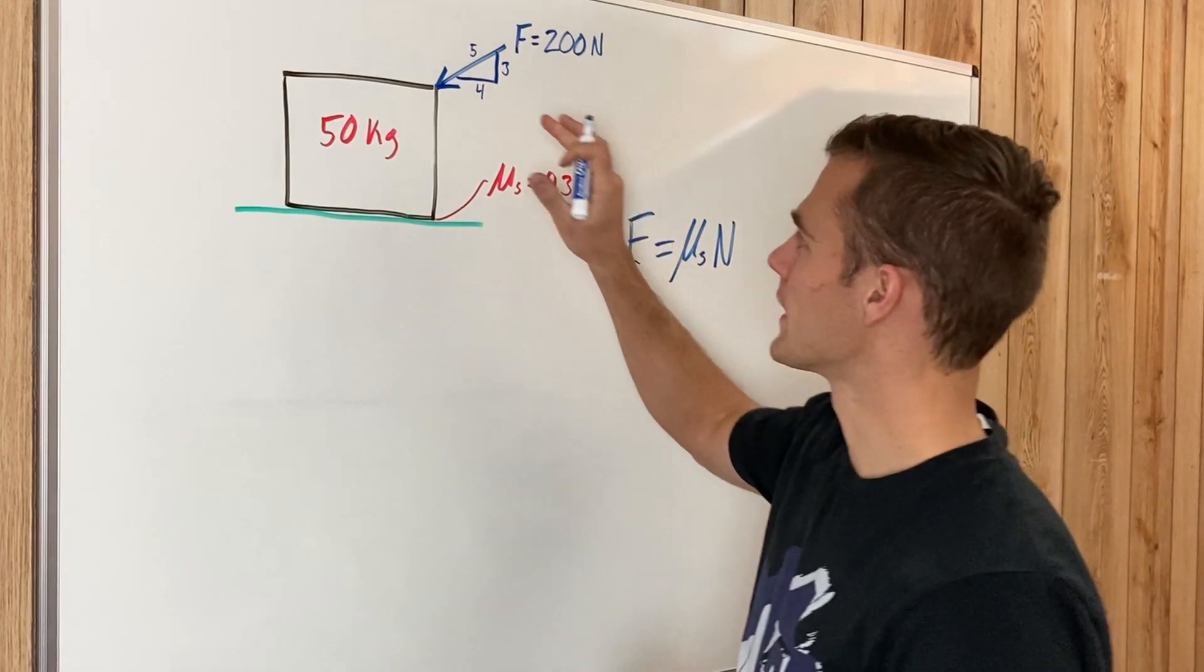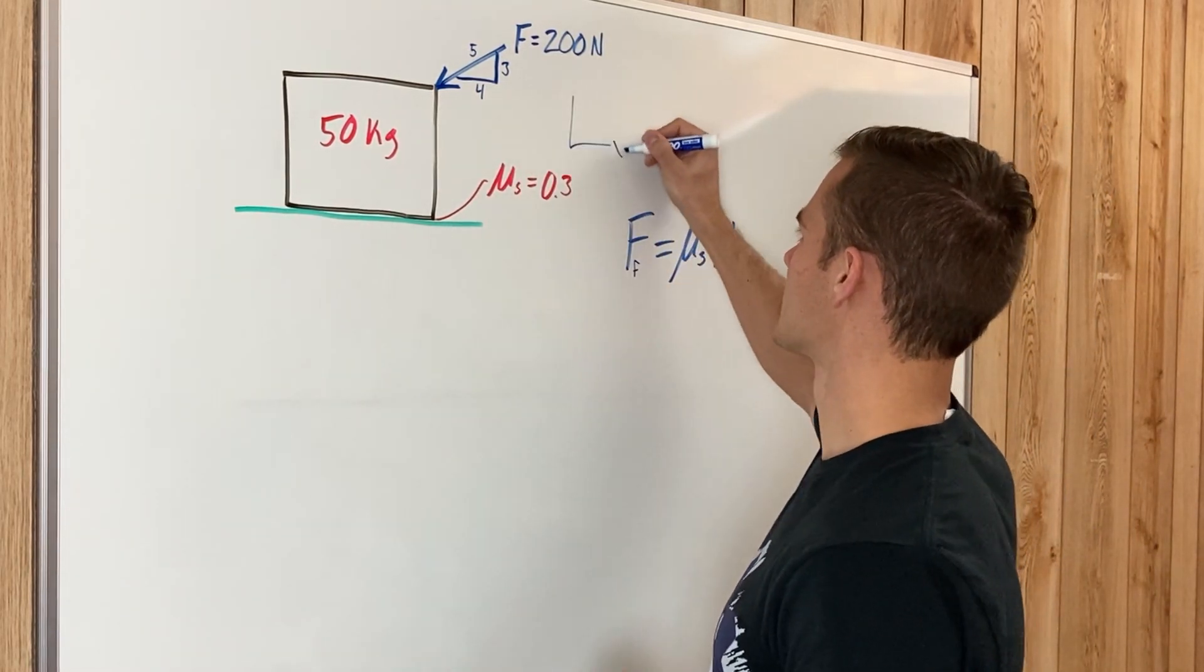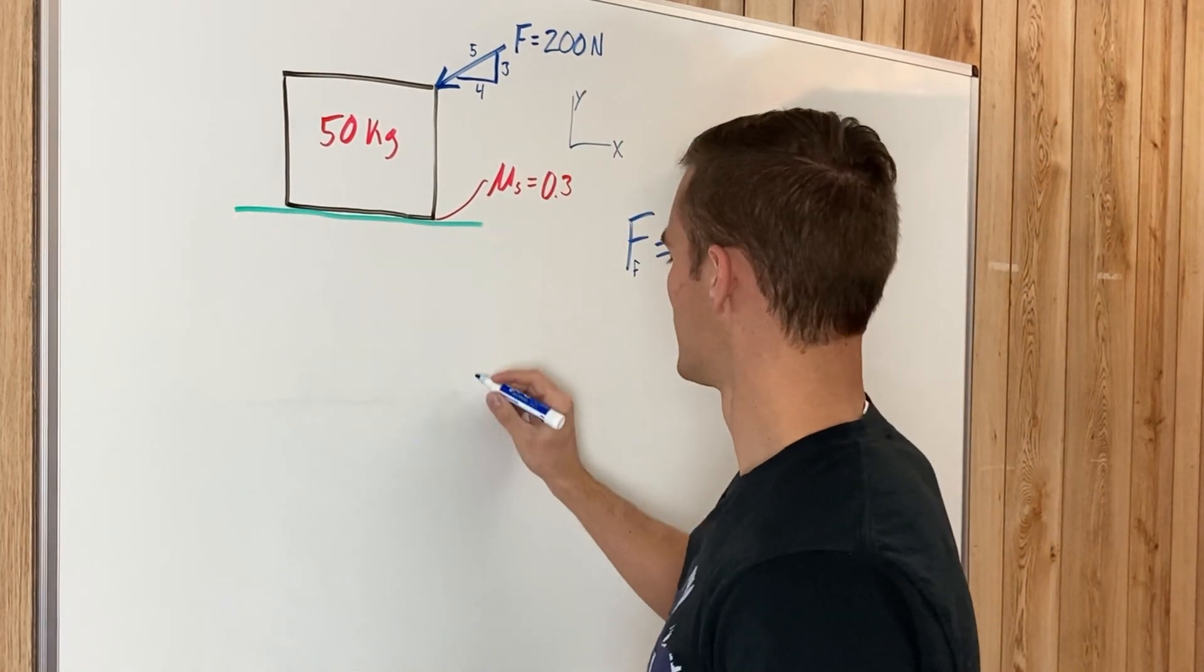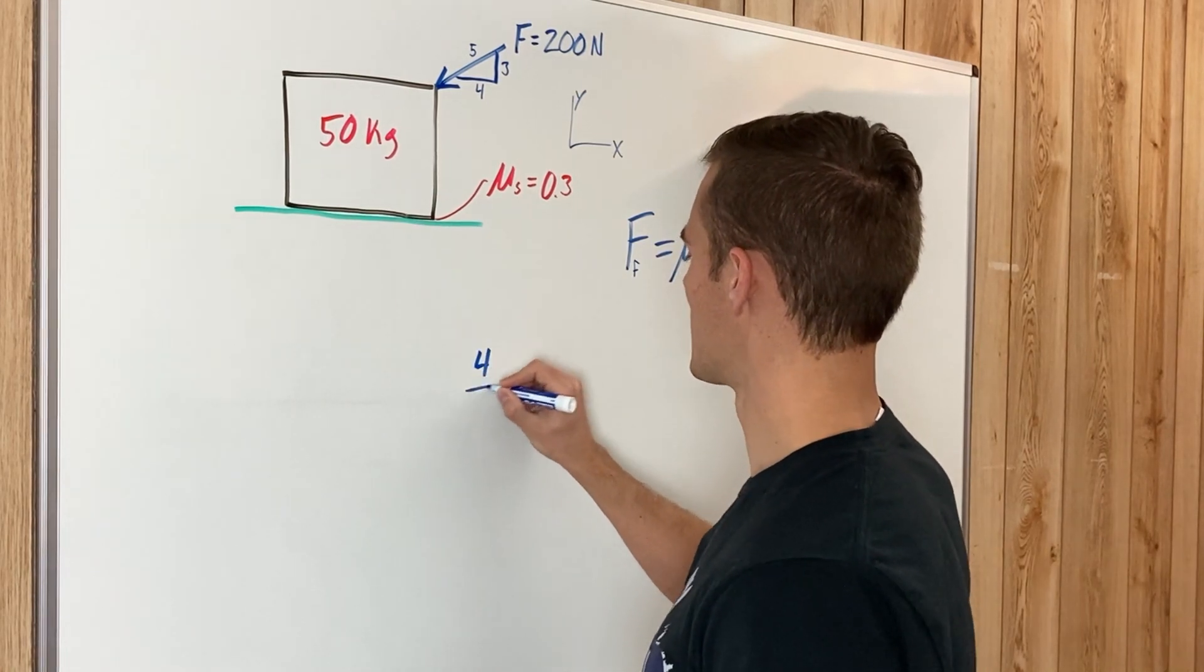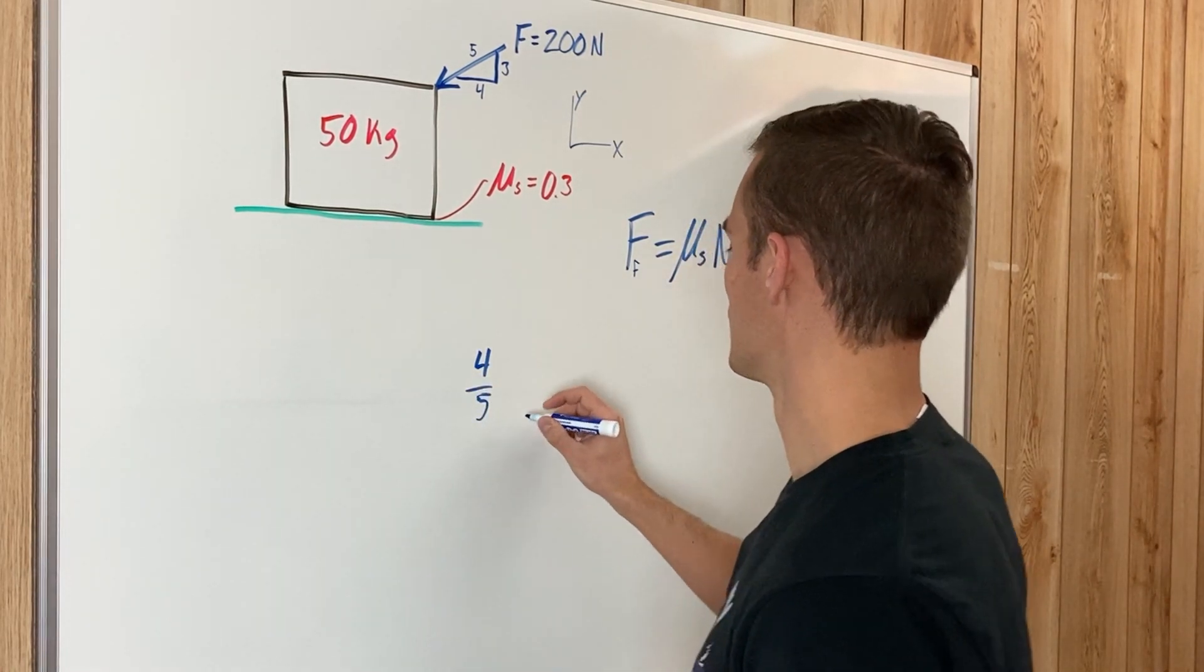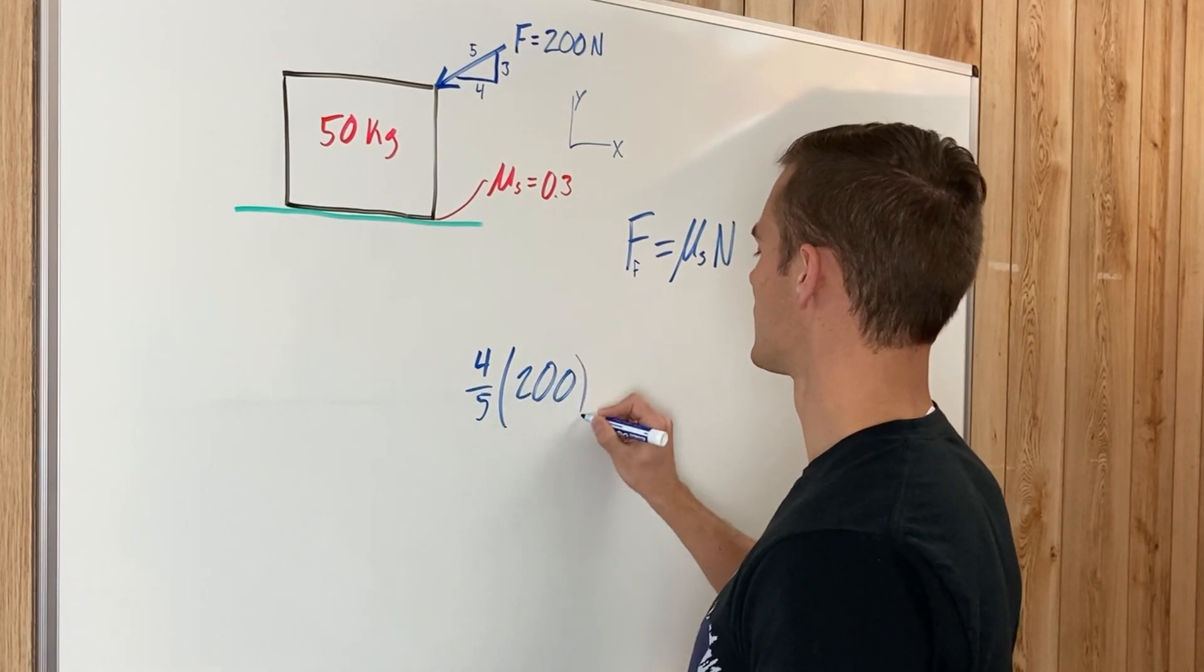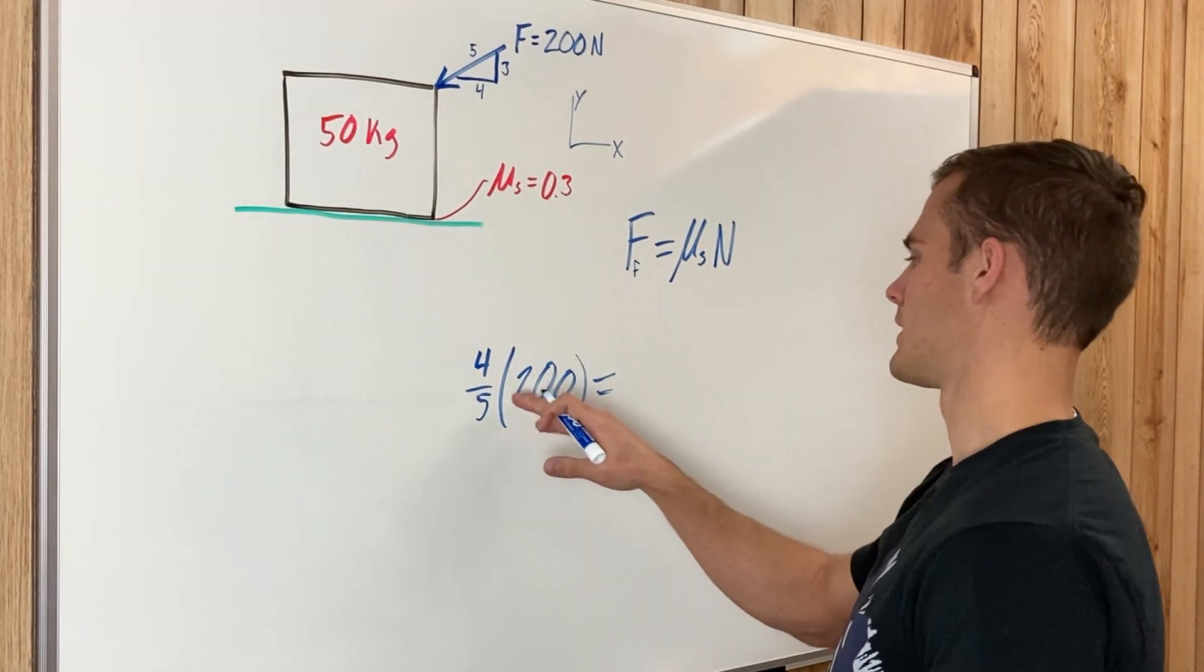We'll call these the x and y directions. We need to find the component of the force in the x direction, and using the geometry of this triangle, that would be 4/5 times 200, which equals 160 newtons. So the force of friction on here is 160 newtons.